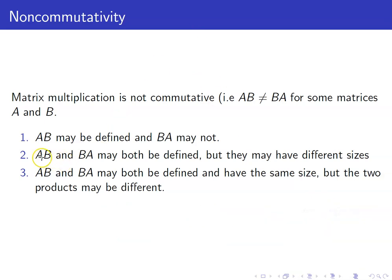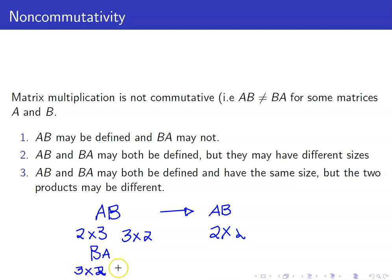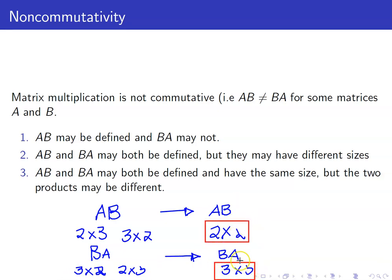Next, it's possible that AB and BA may both be defined but have different sizes. For example, suppose A is 2 by 3 and B is 3 by 2. In that case, AB would be of size 2 by 2. However, BA is 3 by 2 multiplied with 2 by 3, so BA is of size 3 by 3. Just by looking at the sizes, AB and BA cannot be equal because they have different sizes.